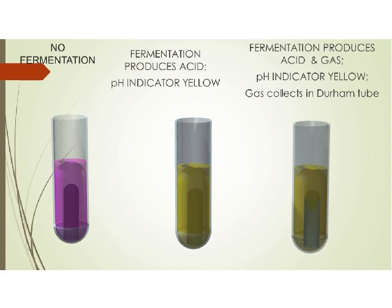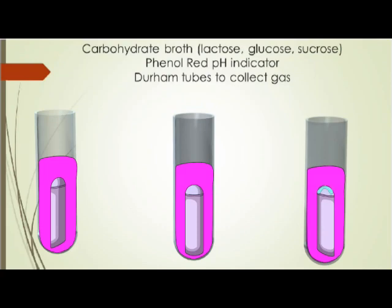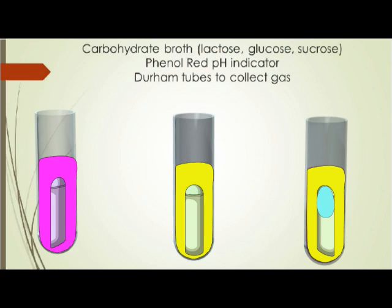Some microbes can ferment these sugars and produce carbon dioxide, which then accumulates in a smaller test tube placed upside down in the larger test tube, known as a Durham tube. A yellow broth indicates that acid was produced as the carbohydrate was fermented, and a gas bubble developing in the upside-down Durham tube indicates that gas is produced during the process.